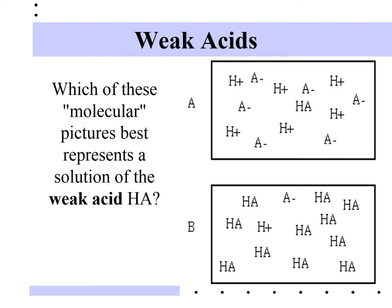Strong acids ionize completely, so essentially every HA particle should be broken apart. In the top picture, nearly all HA particles are ionized into H+ and A−, with only one HA remaining — that represents a strong acid. In the bottom picture, most acid particles remain as HA with only one ionized — that represents a weak acid. Note: in reality, the H+ ions would be donated to water molecules, so every H+ should really be drawn as H3O+.